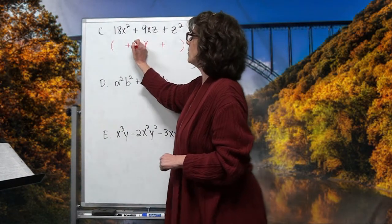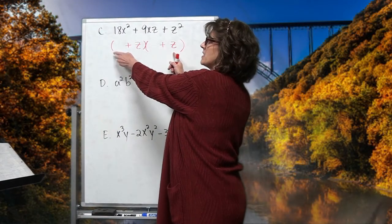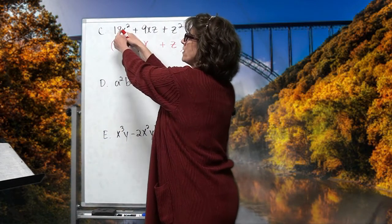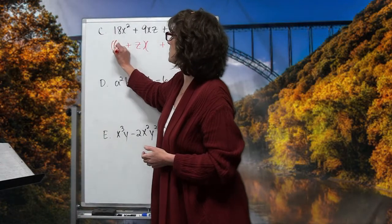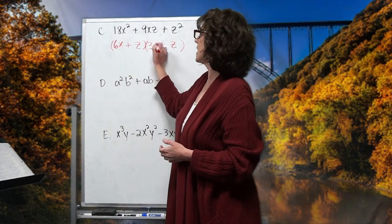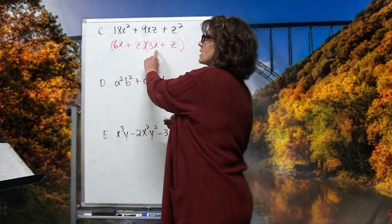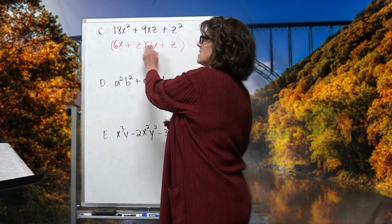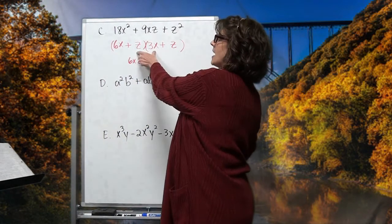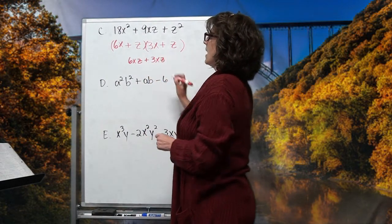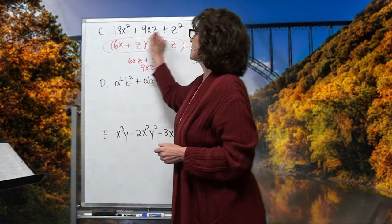I split z squared into the back slots as a z and a z. x squared splits into the front slots as an x and an x. These two numbers will multiply for 18 and add for 9 — that's 6 and 3. When I check by FOIL: 6x times 3x gives 18x squared; z times z gives z squared; out here 6x times z gives 6xz; inside z times 3x gives 3xz. Combining 6xz and 3xz gives 9xz, which is exactly what I wanted. Having extra variables really doesn't make a mess — it works itself out.